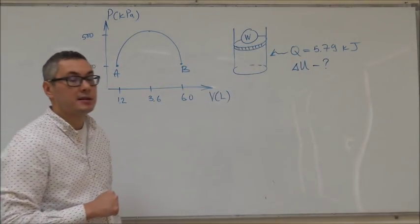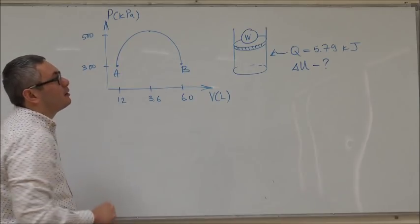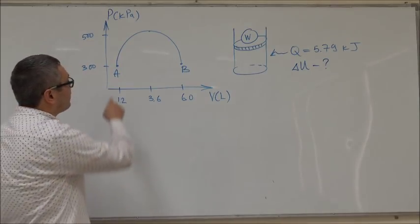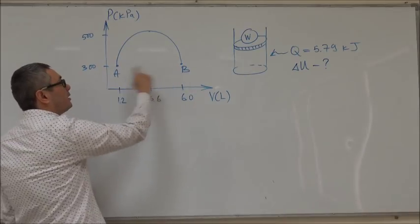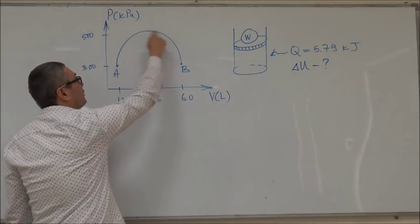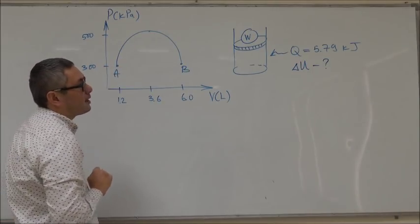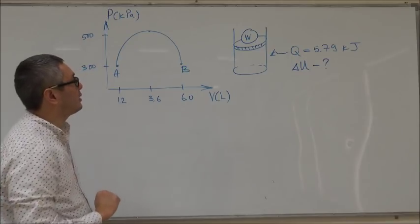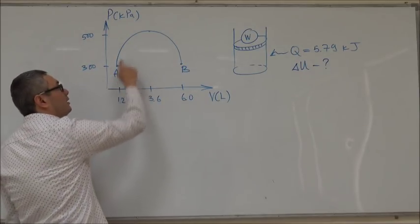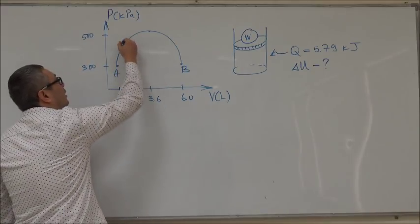Such that on a PV diagram the state of the gas changes from point A to point B in this semicircular fashion, so this curve is a semicircle. So the pressure and the volume of the gas as a result of this manipulation changes from A to B in this fashion.